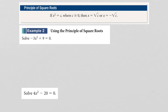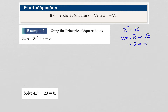Now let's look at the principle of square roots. It states: if x squared is equal to c, and c is a non-negative number, then x must be the square root of c or the negative square root of c. For example, if x squared equals 25, then x would be either the square root of 25 or the negative square root of 25, which is 5 or negative 5.